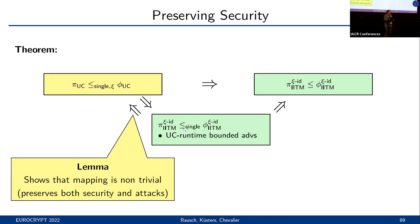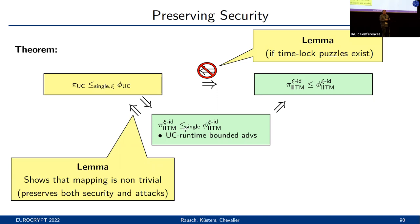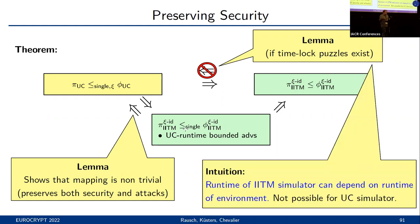However, more generally, full IITM security in an arbitrary setting does not actually imply UC security. Namely, if time-lock puzzles exist, then there are UC protocols such that no simulator exists. But for the mapped protocols, we can construct an IITM simulator and prove security. This applies to pretty much any mapping that preserves the behavior of the UC protocols. The underlying reason is intuitively that the runtime of the IITM simulator is allowed to depend on the runtime of the environment, so our simulation can accommodate particularly powerful environments that try to overwhelm the simulator. The same is not possible for the UC simulator, which must essentially work independently of how much runtime the environment uses.